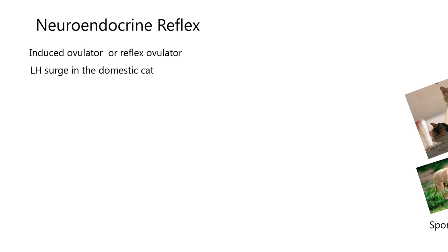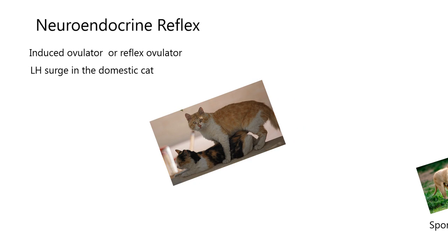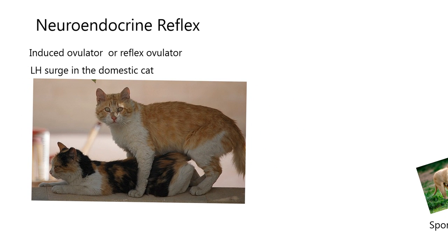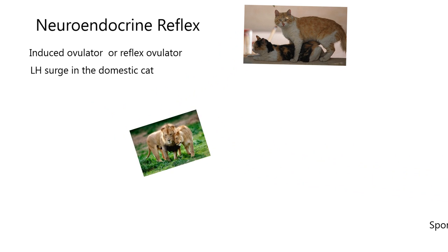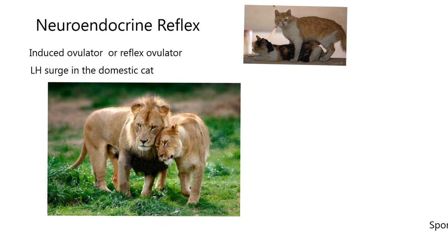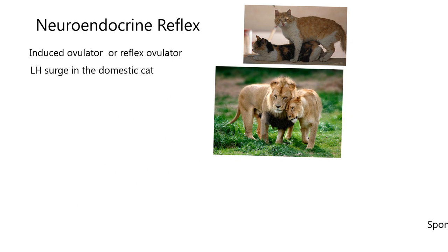Some animals ovulate without mating. The other term for these animals is spontaneous ovulator. This would be like a dog, a horse, and many common farm animals that ovulate without mating.